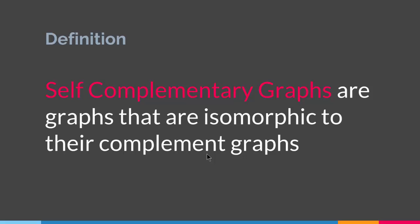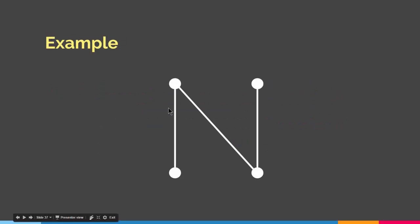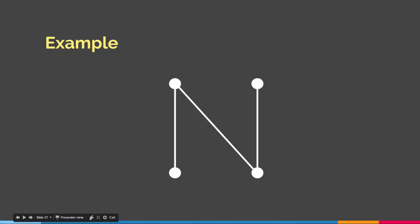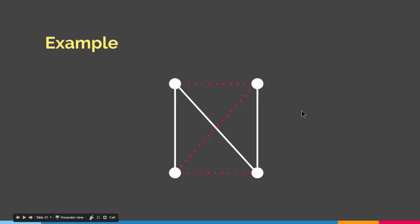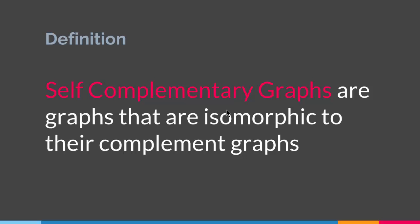Let me give you an example. This graph has four vertices and three edges — this vertex is connected to that one, this to that one, and this to that one. A self-complementary graph is a graph that is isomorphic to its complement. We can create a complement of this graph that is isomorphic to itself. As you can see, the graph connected by the dashed red lines is isomorphic to this white graph, yet they are the complement of each other. So this graph is self-complementary because its complement is isomorphic to the graph itself.